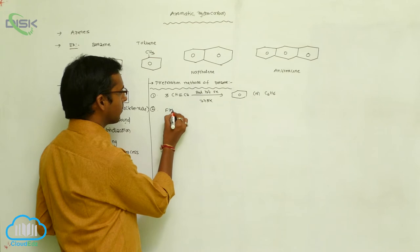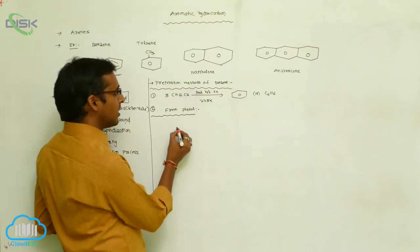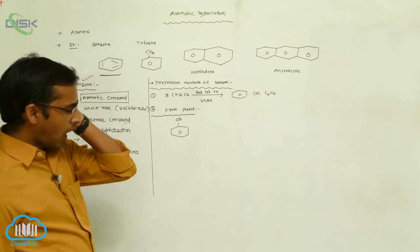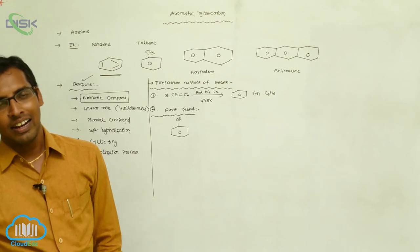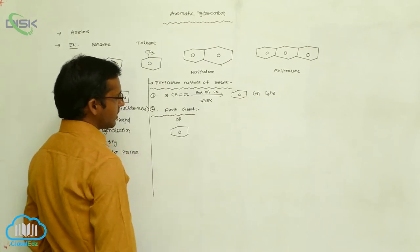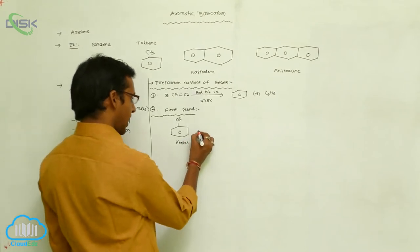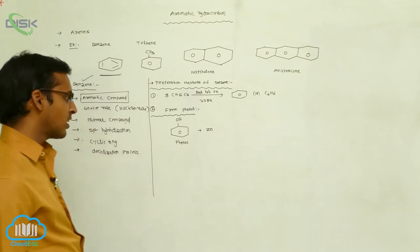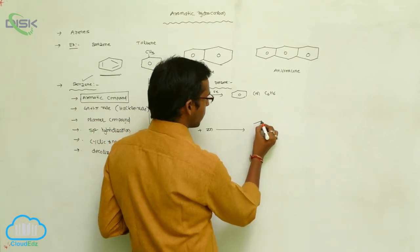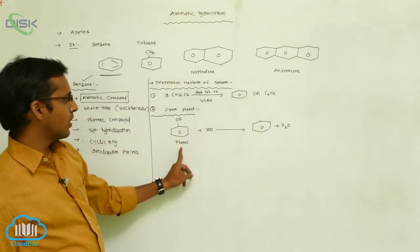The second preparation is from phenol. Phenol means on benzene, a hydroxyl group (OH) is substituted — such a compound is called phenol. This phenol is reacted with zinc metal; it undergoes a dehydration process, meaning elimination of a water molecule. It gives benzene plus water. So preparation of benzene from phenol uses zinc metal.